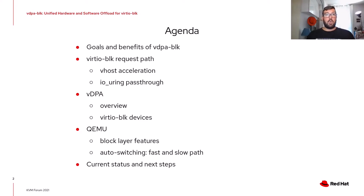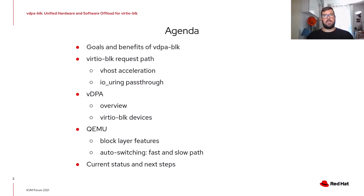During this presentation we will talk about VDPA Block, starting from goals and benefits. Then we'll take a look at the standard path followed by a VirtIO Block request and two possible ways to accelerate that path. We'll also take a quick look at VDPA, focusing on the VirtIO Block device accelerators, and finally look at QEMU, especially at the block layer features that are bypassed when we use accelerators.